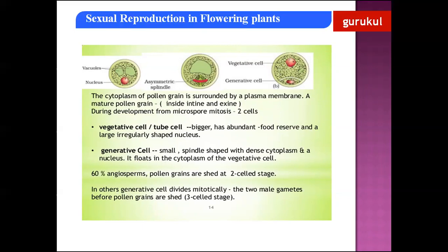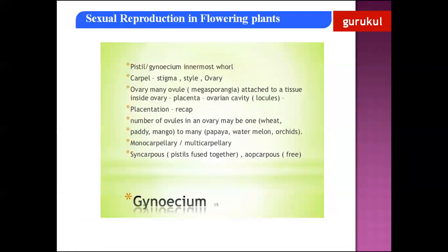In some species, pollen grains can also be shed in the three-celled stage, where the generative cell undergoes one mitotic division resulting in the formation of two male gametes. Thus the generative cell divides mitotically producing two male gametes, whereas the tube cell produces the pollen tube. The pollen tube carries the two male gametes to the region where the egg cell is present for fertilization. So pollen grains can be shed either in the two-celled stage or three-celled stage — the three cells being two male gametes and one vegetative cell.